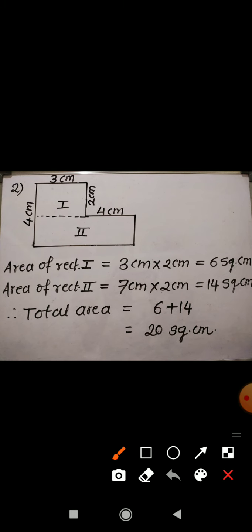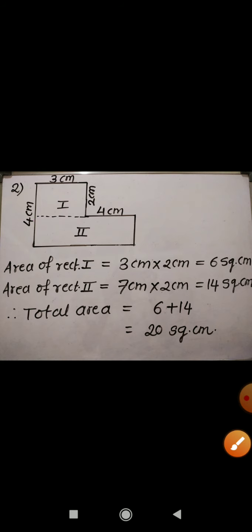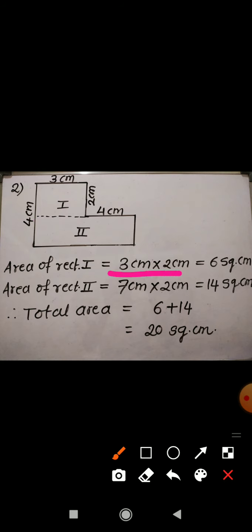Similarly, in the second figure as well, you can find out the area. I have split this figure so that here I have again got two rectangles: first one and second. Now let us find out the area of the first rectangle. In the first rectangle, the length is 3 cm and breadth is 2 cm. So area of rectangle will be 3 cm into 2 cm, that is 6 square cm.